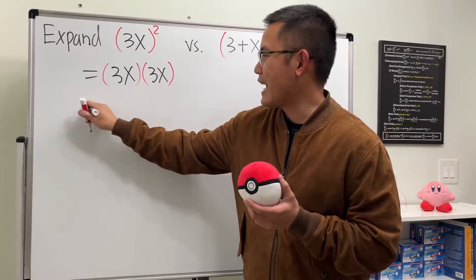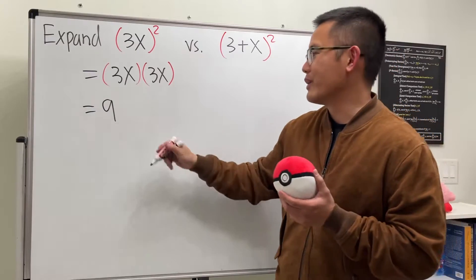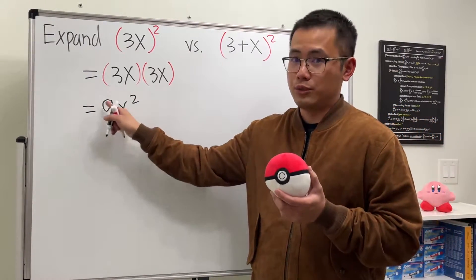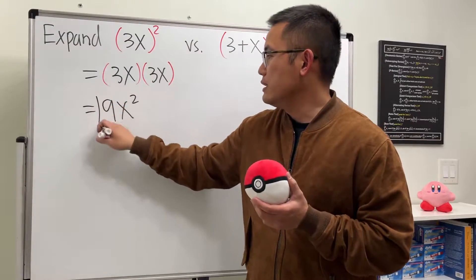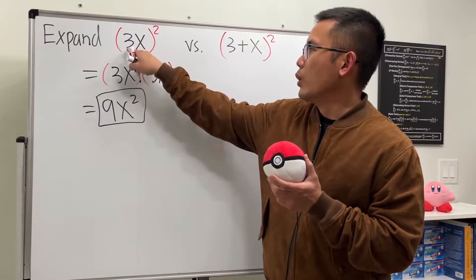And then x times x will give us x to the second power. So that will be it. And again, of course the 9 is just 3 squared, so it's the same thing. This is it, and of course this is the fast way to do it.